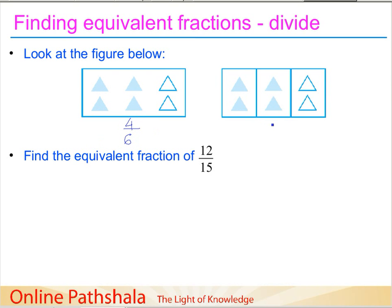In the first figure we have six total parts and four parts shaded, giving four by six. In the second figure, one part is comprised of two triangles, so we have three total parts and two parts shaded, giving two by three. We essentially divided both numerator and denominator by two, which is a pictorial representation of what happens when we divide fractions to get equivalent fractions.